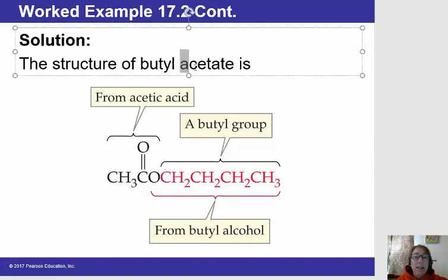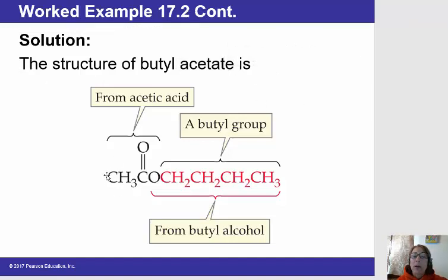And then acetate, that part comes from the carboxylic acid. So acetic acid has two carbons. So we have the CH3 and then the carbonyl carbon. And then we always have that carbonyl carbon bonded to an R group as well as a single bond to the oxygen.